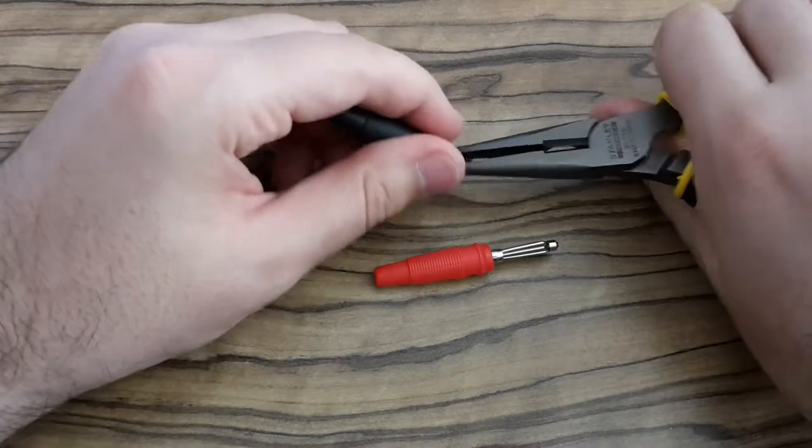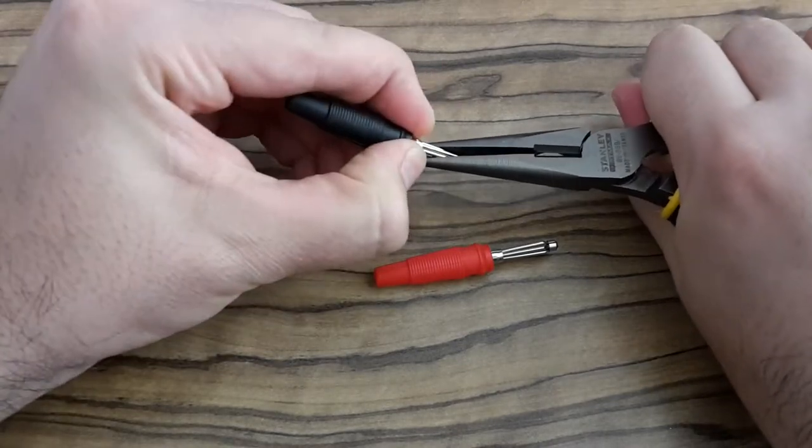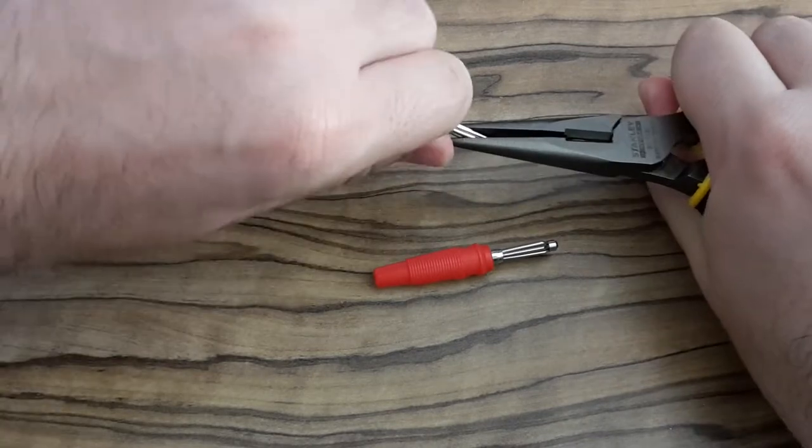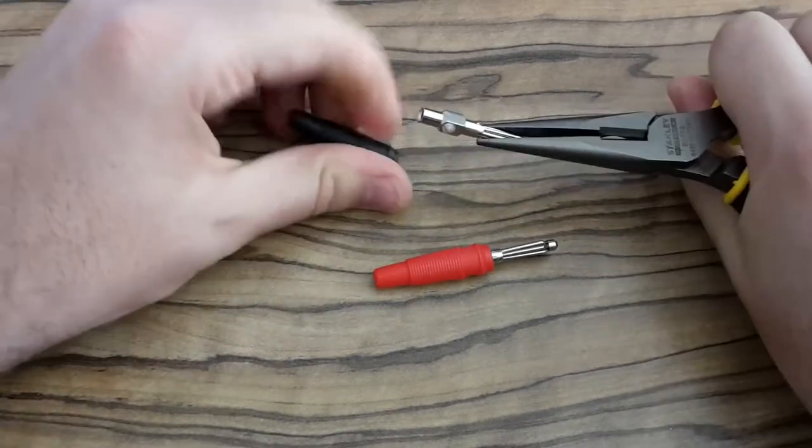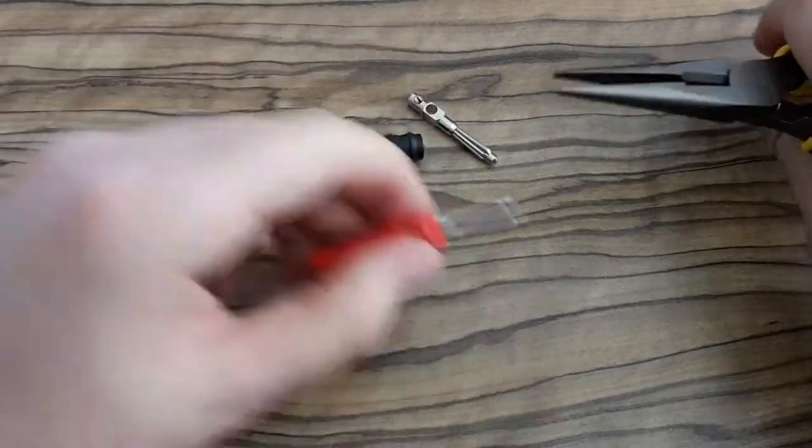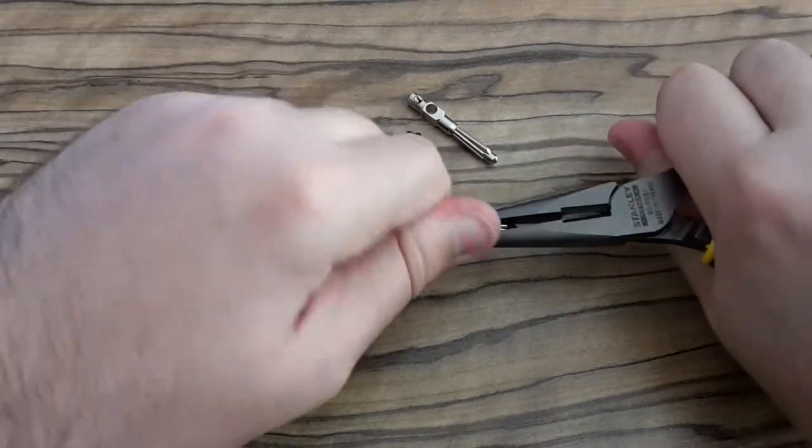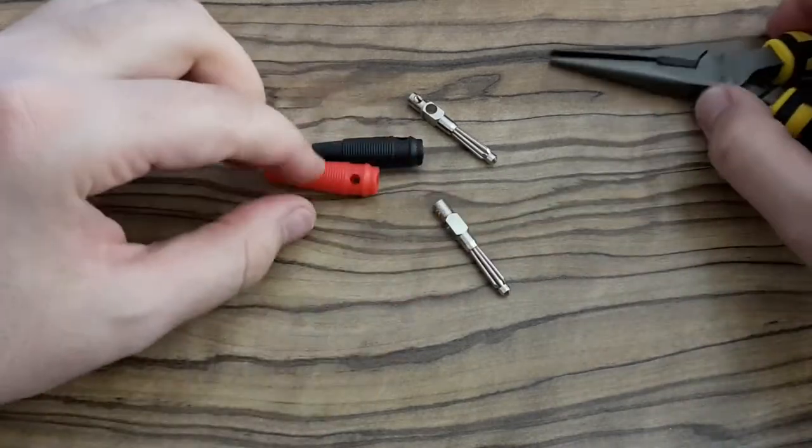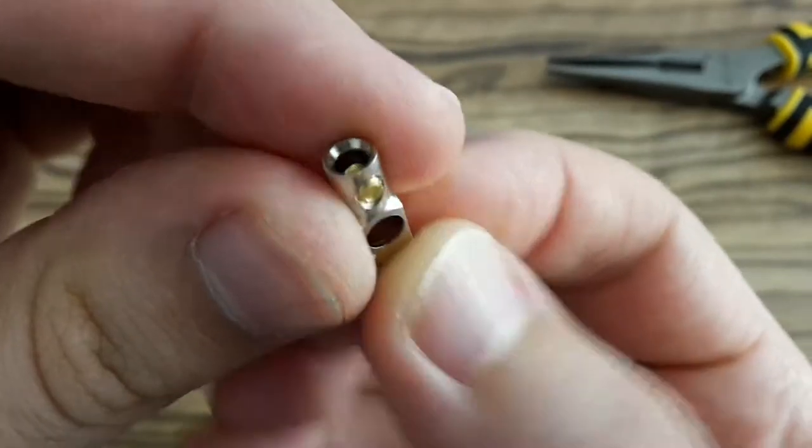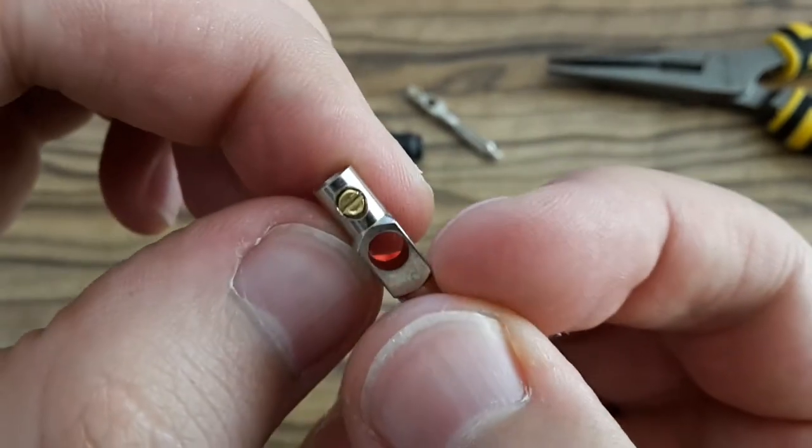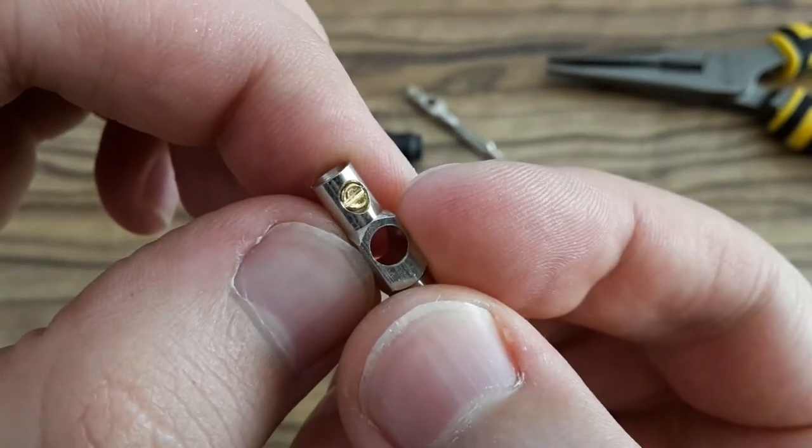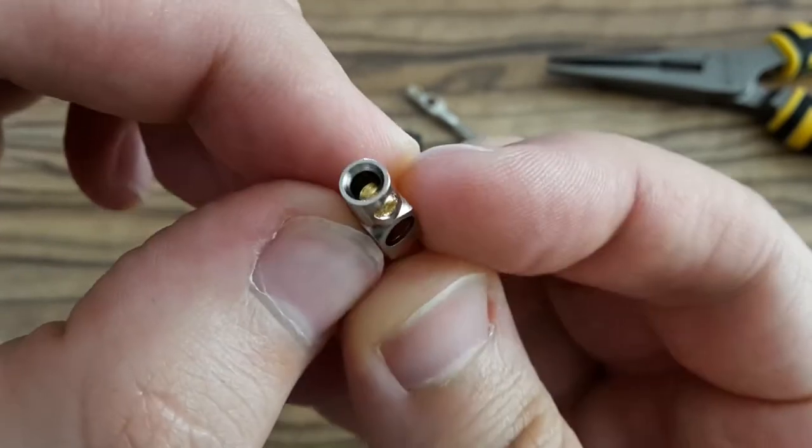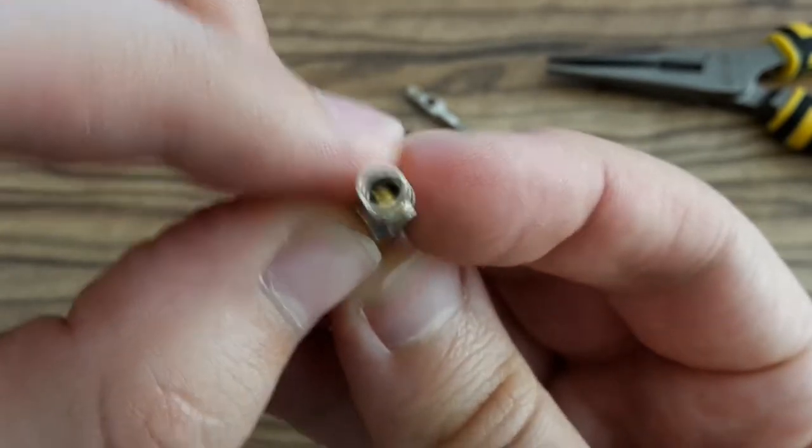So the first thing I'm going to do is to connect these male banana connectors to wires. First I have to remove insulation from them. Here you can see the connector and the small screw. And this is the hole where I'm going to put a wire.